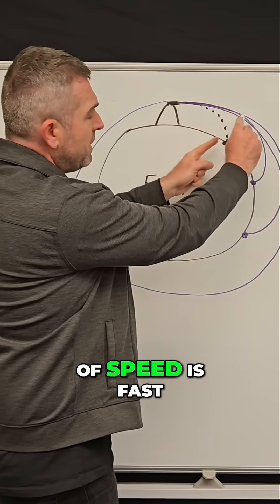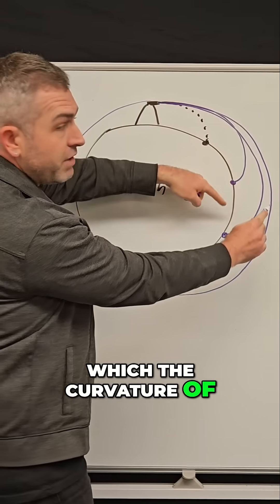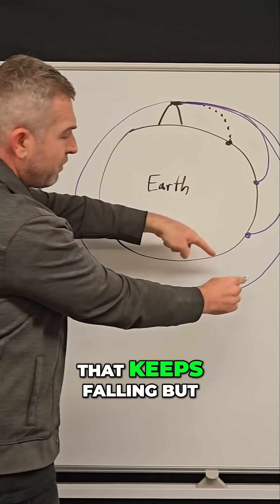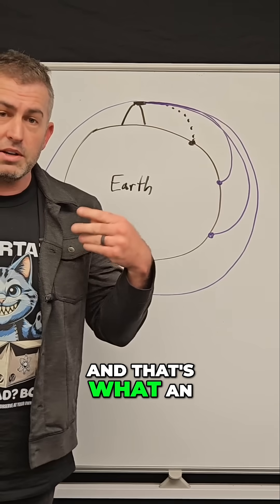So if the rate of speed is just as fast as the rate at which the curvature of the Earth is changing, you have an object that keeps falling, but is never able to hit the ground. And that's what an orbit is.